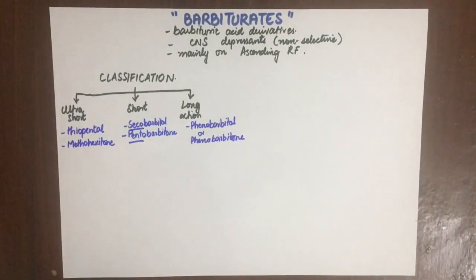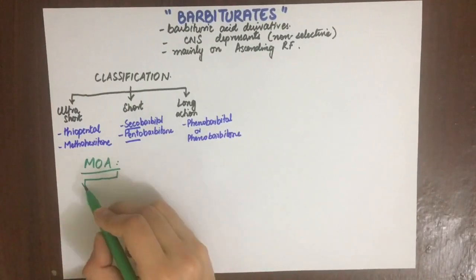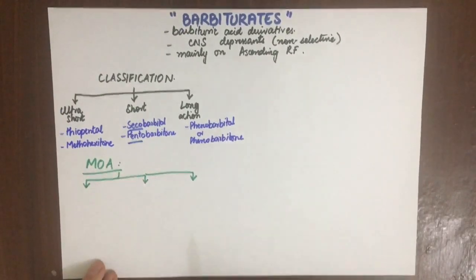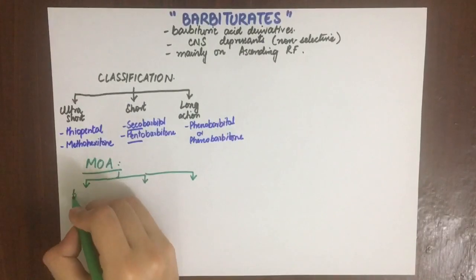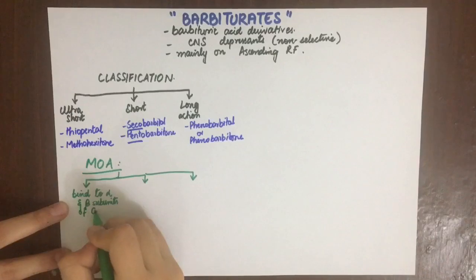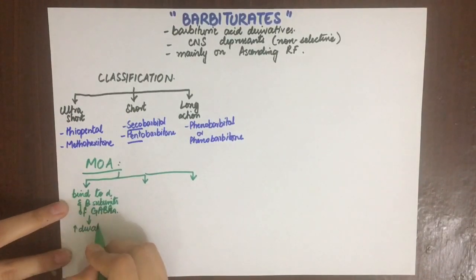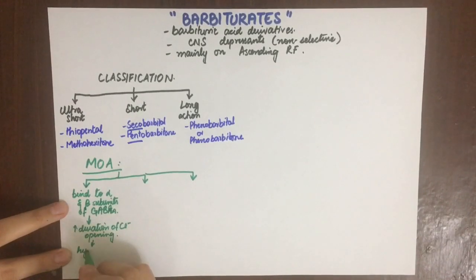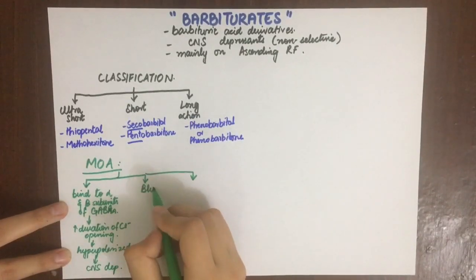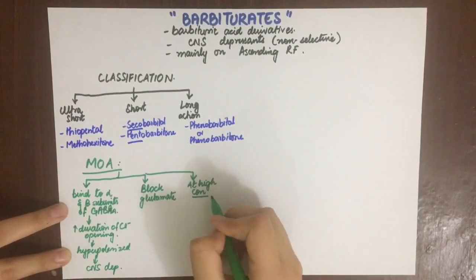The mechanism of action of barbiturates is mainly, as we've discussed previously, that it binds to the alpha and beta subunits of the GABA-A receptor. By that, it increases the duration of chloride channel opening, thus hyperpolarizing the neuronal membrane and causing CNS depression. Secondly, it also blocks glutamate, which is an excitatory neurotransmitter, thus also contributing to CNS depression.